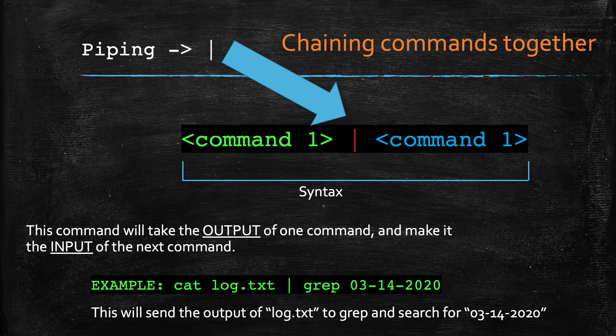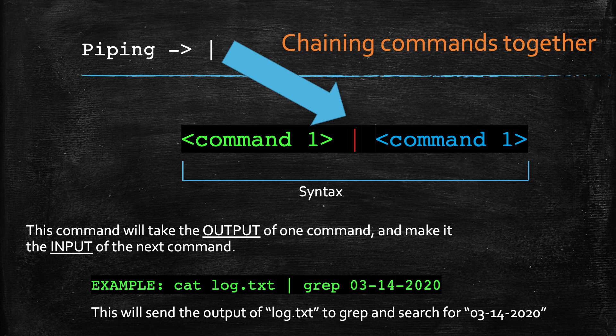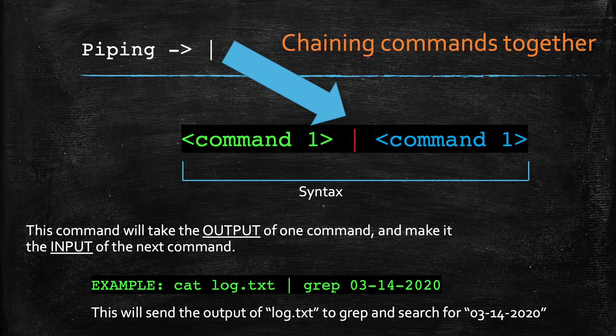That brings us to piping. What is piping? Piping allows us to chain certain commands together. It's a little confusing at first, but piping takes the output of the first command and it becomes the input for the second command. In this example, cat log.txt will print out the entire file to the terminal, and then we take that output and pipe it — it becomes the input for the new command grep.